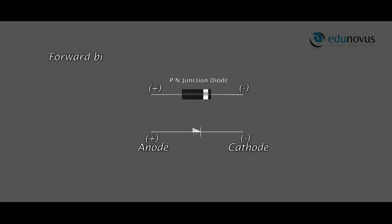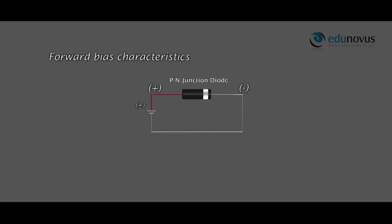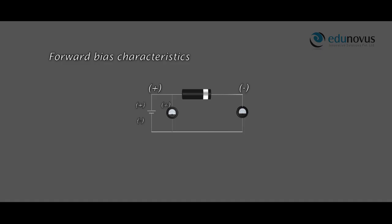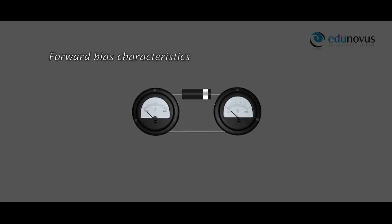Now let us study the forward bias characteristics. When the P section is connected to the positive terminal and the N section is connected to the negative terminal of the battery, the PN junction is said to be in forward bias. With the increase in forward bias voltage, the forward current increases slowly. When the forward bias voltage V equals the threshold voltage, the forward current increases rapidly.